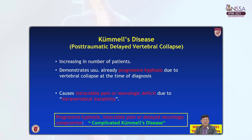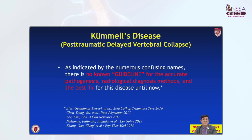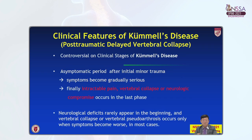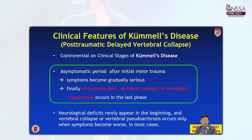Complicated Kummel disease refers to patients having progressive kyphosis, intractable pain, and/or delayed neurologic compromise. As indicated by the numerous confusing names, there have been no known guidelines for accurate pathogenesis, radiological diagnosis method, and the best treatment until now. These are the summarized clinical features of Kummel disease, though there are many controversies in the literature.